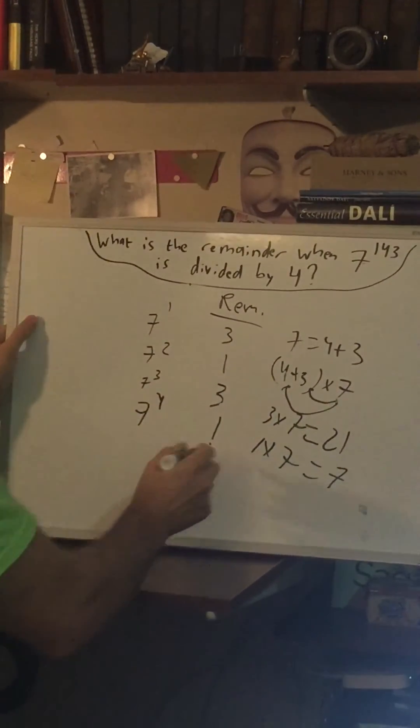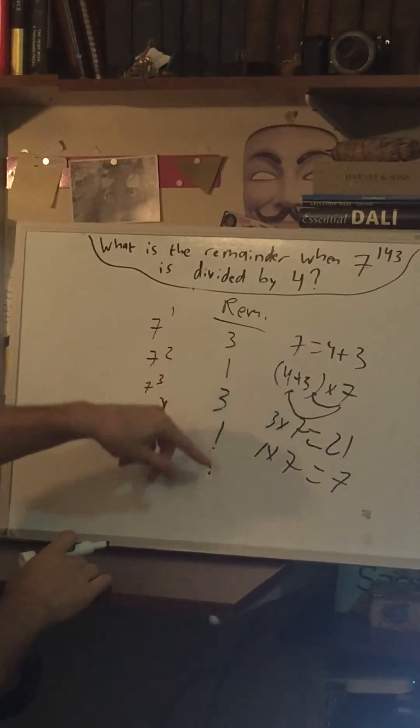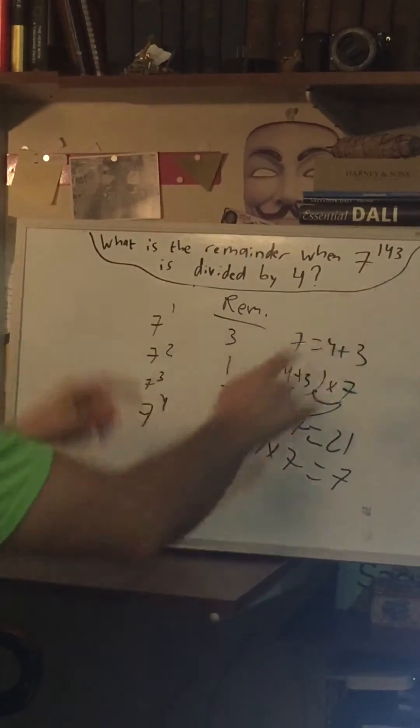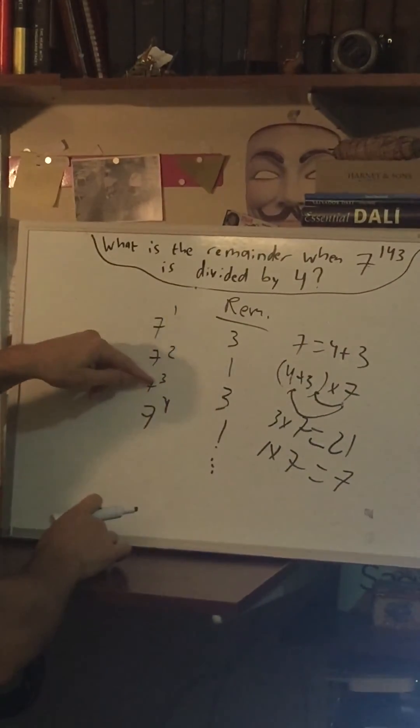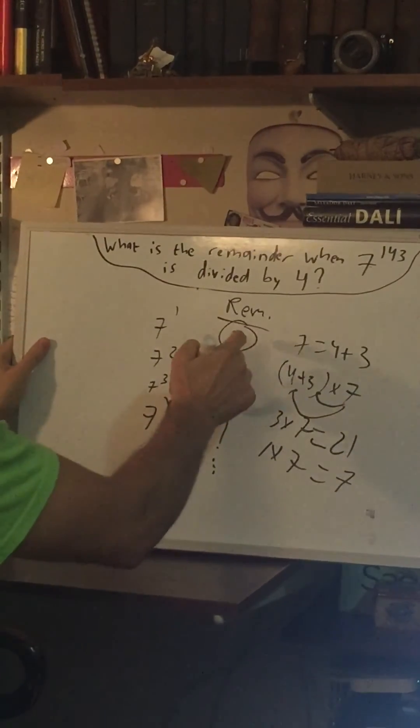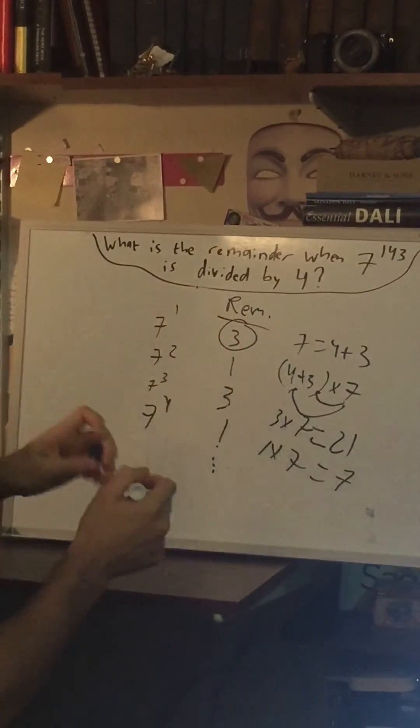So at this point you might notice there's a pattern, 3, 1, 3, 1, 3, 1. And we just see since that's an odd power, we're going to stop on one of these odd ones. And the odd ones are always 3. So the answer to this question is a remainder of 3.